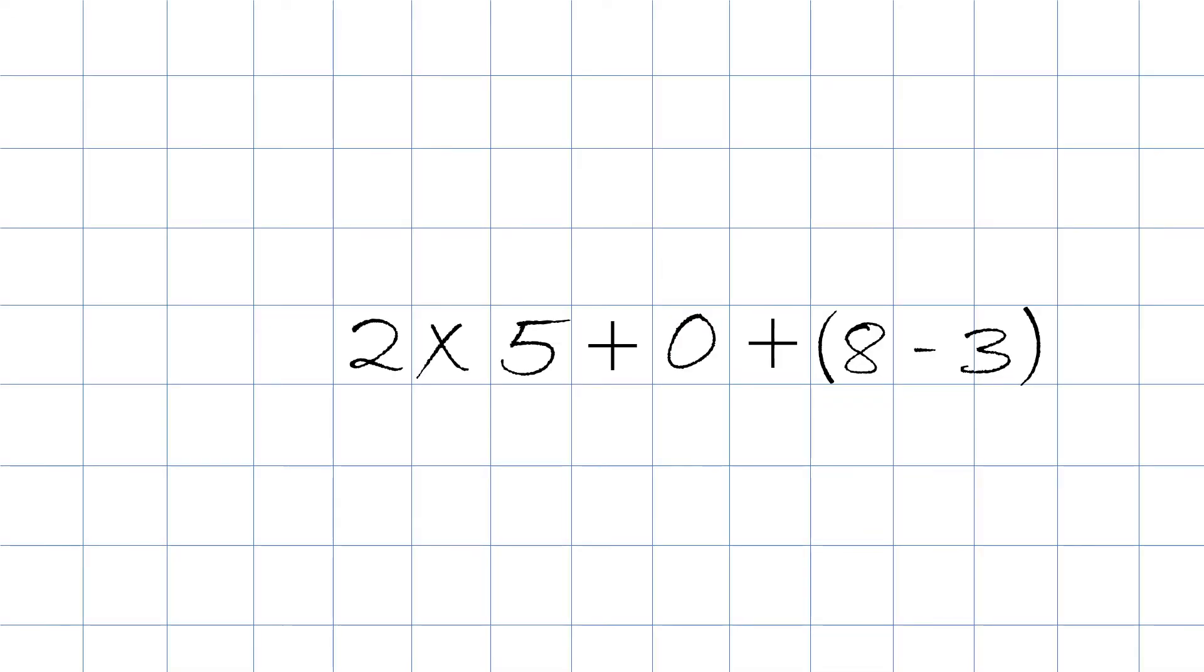Here we have 2 times 5 plus 0 plus 8 minus 3 in the parentheses. And so, the first step is parentheses. And yes, we have 8 minus 3 in the parentheses, the answer will be 5.